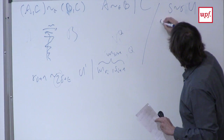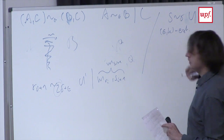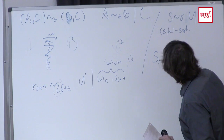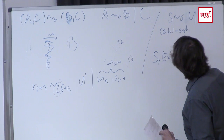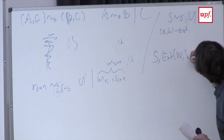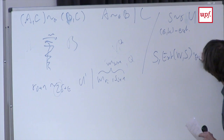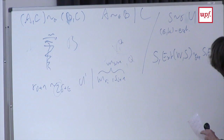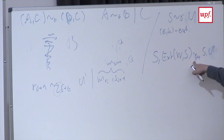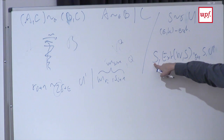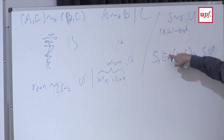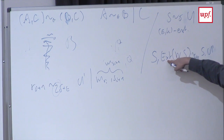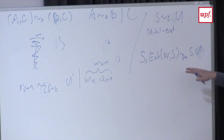Let me show you the direct proof. Define delta_x as the statistical distance of the extracted variable using seed x from uniform. I want to bound the statistical distance of the pair (S, ext(W, S)) from the pair (S, U'). Since the first argument S is the same in both distributions, I can sum over the first parameter: sum over all possibilities for x of the probability that S equals x times the statistical distance of ext(W, x) from uniform.